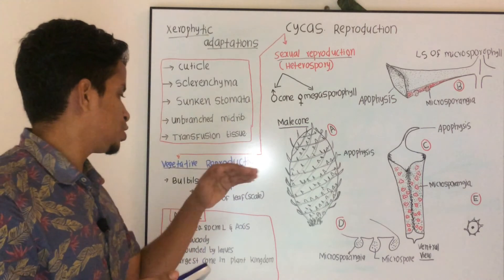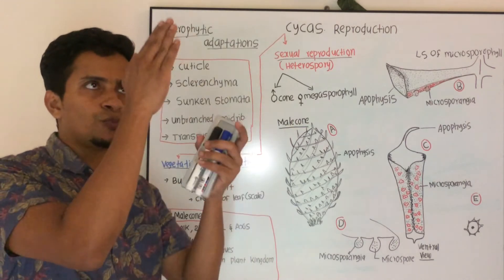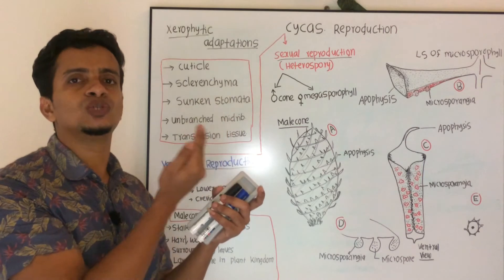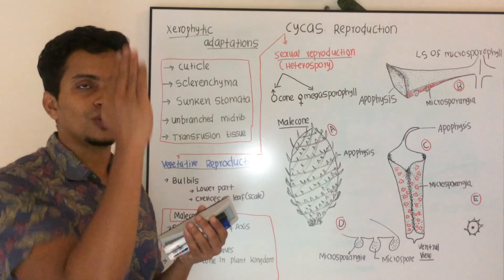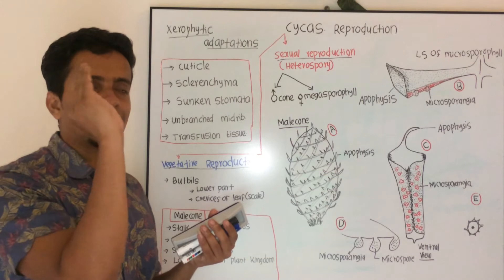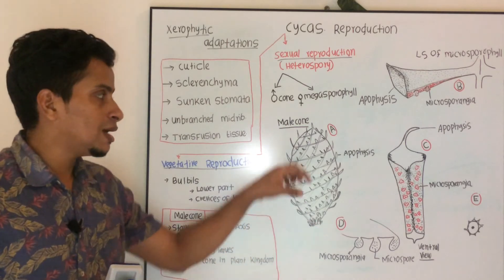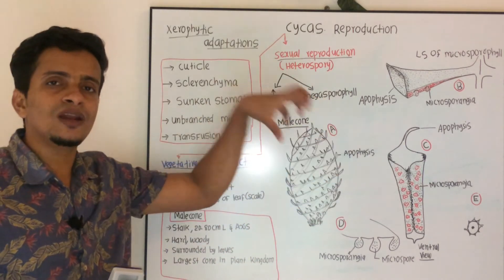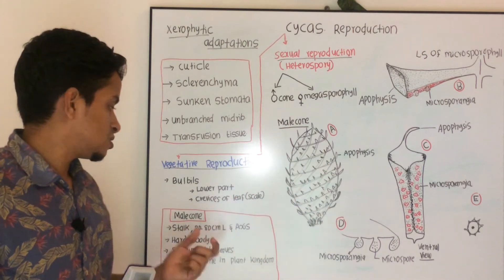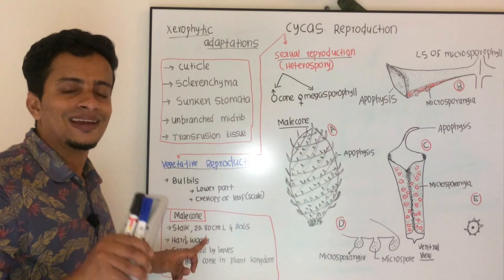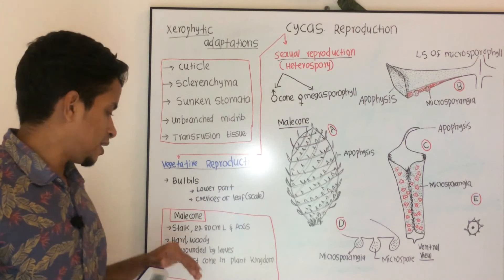Let us look at the features of the male cone. The male cone has a prominent central axis. Around this axis you can see microsporophylls arranged. The male cone is stalked, with a length of 20 to 80 cm, and is surrounded by scale leaves.